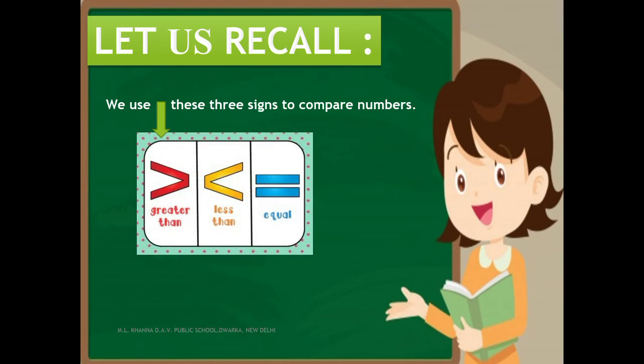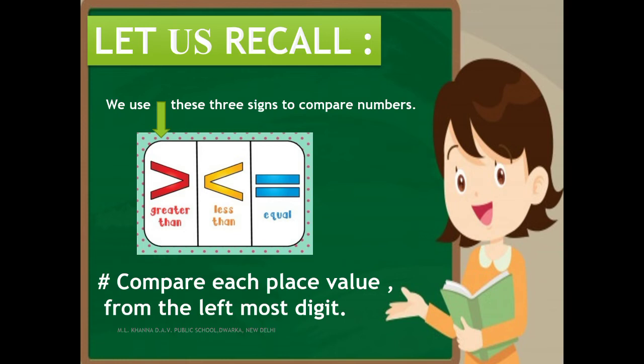We use the greater than sign to find which number is larger or greater than the other number. We use the less than sign to find which number is smaller or lesser than the other number. We use the equal to sign when the numbers are the same. The best way to compare numbers is to compare each place value from the leftmost digit.